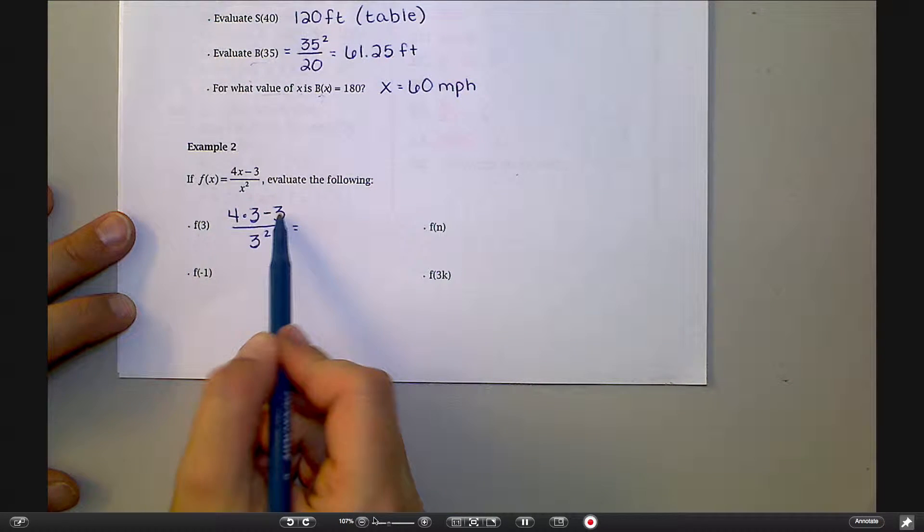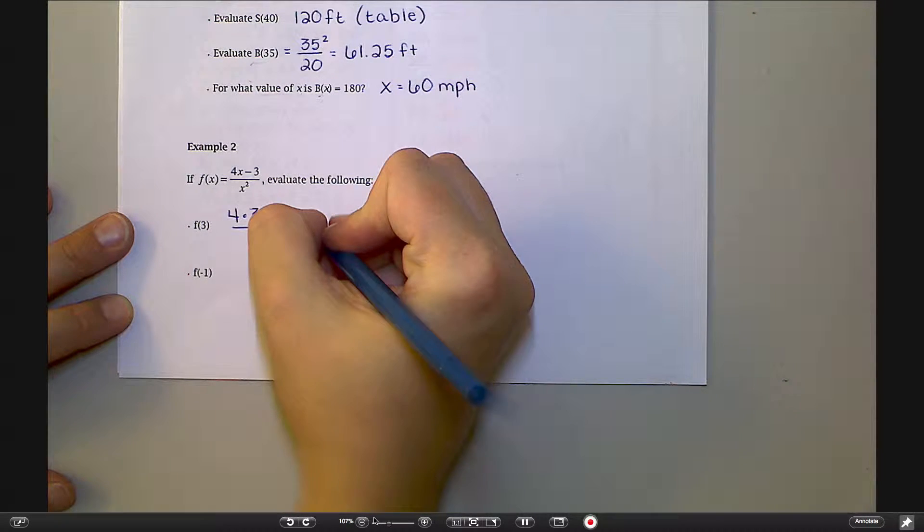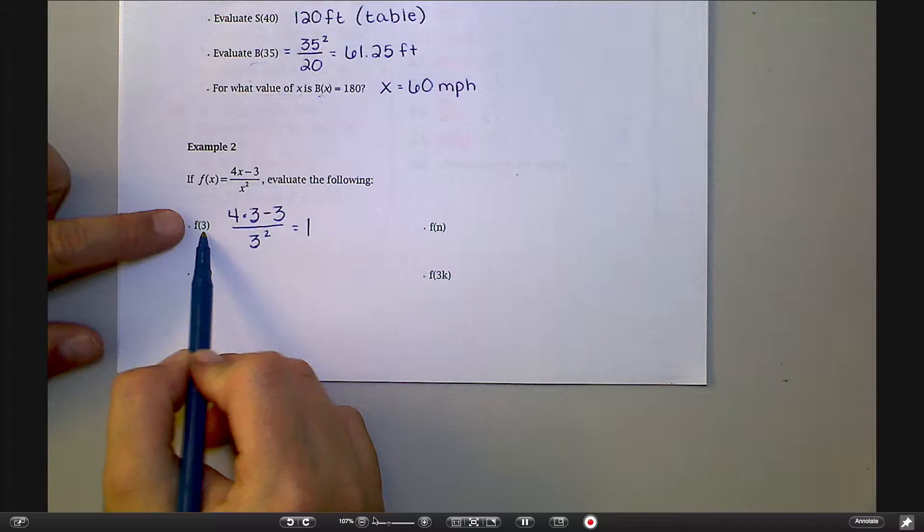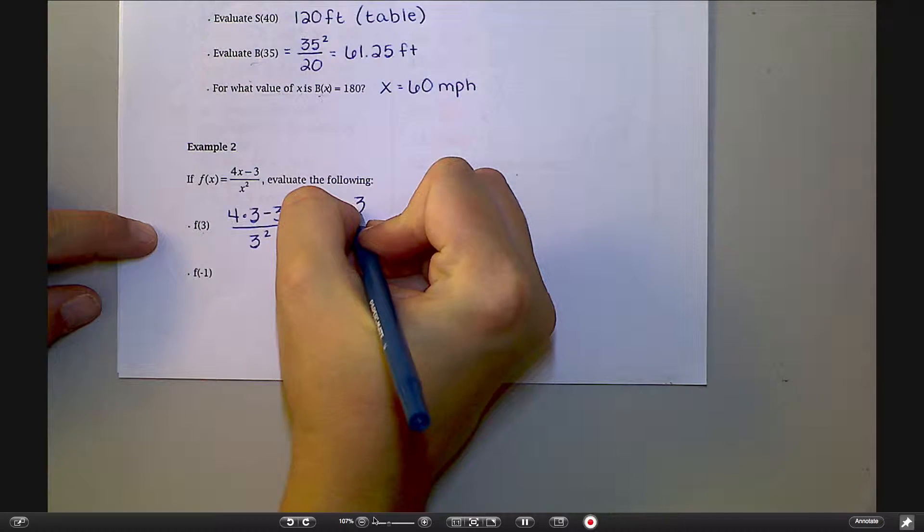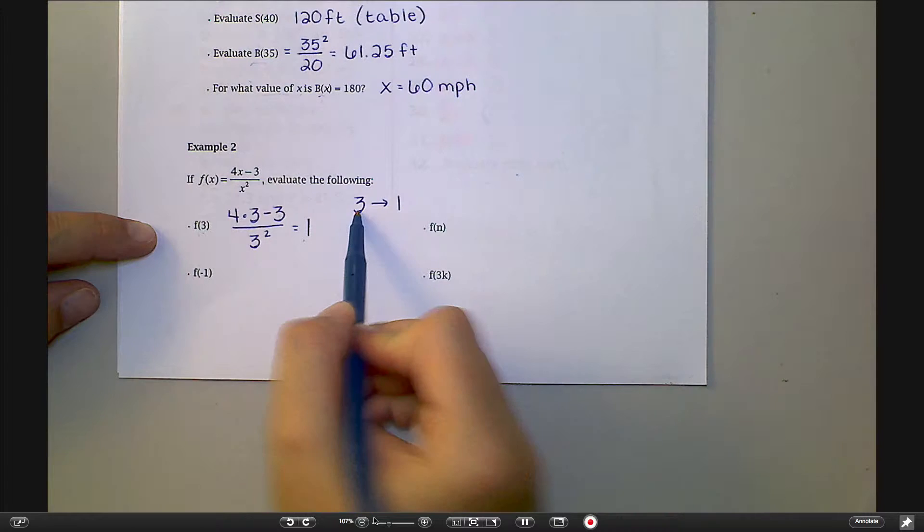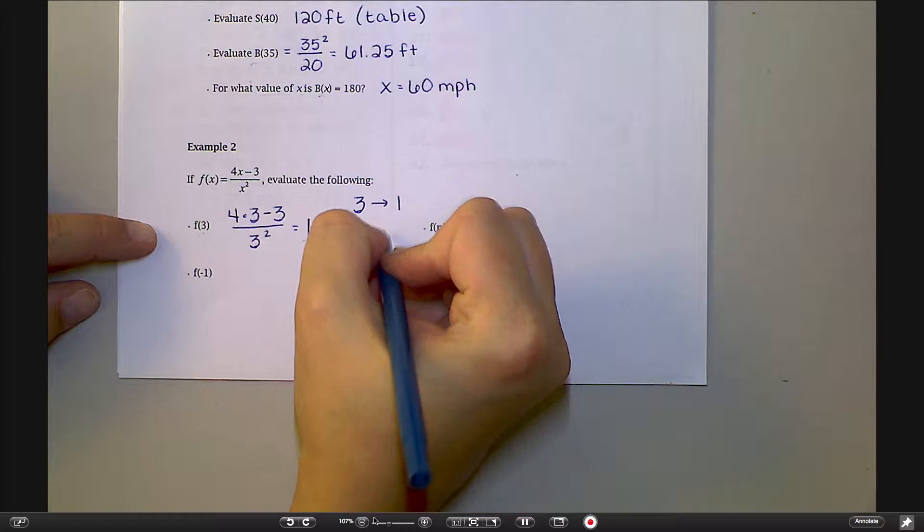Well, 4 times 3 is 12, minus 3 is 9, and 9 over 9 is equal to 1. So what this means in terms of a function is that 3 is matched up with 1. If I was to write it this way, 3 is paired up with 1. This is a piece of your domain, this is a piece of your range. You could also write it as an ordered pair, 3 comma 1.